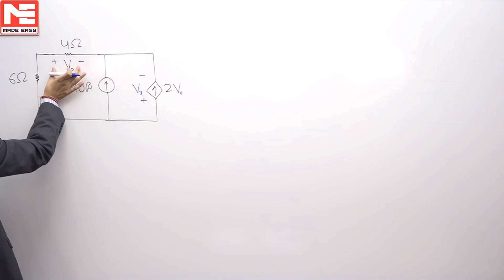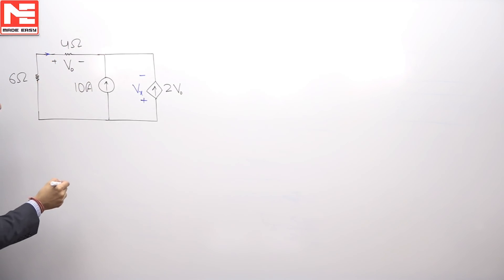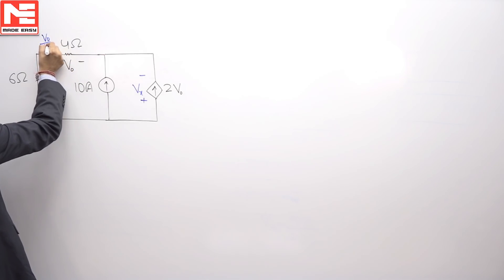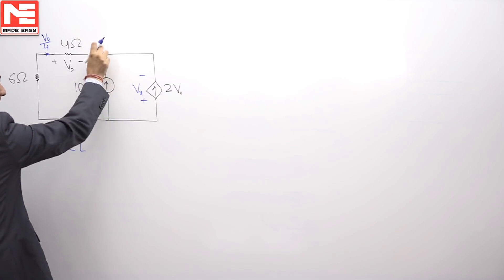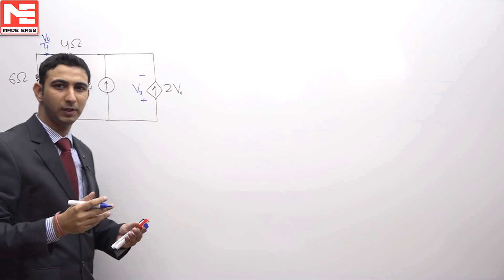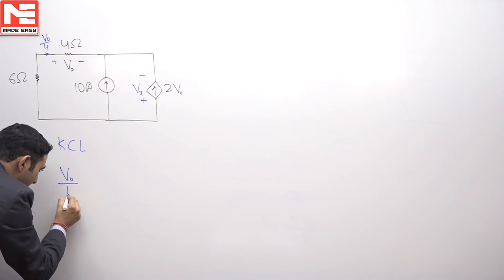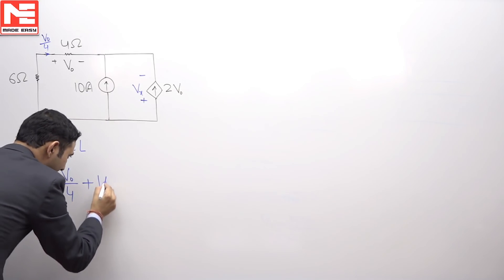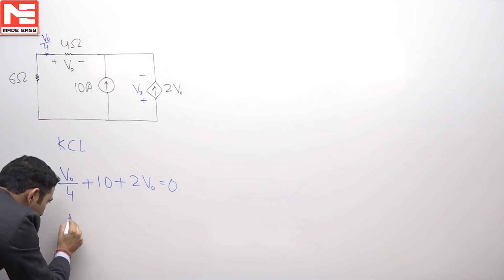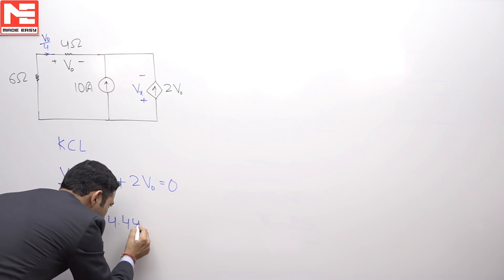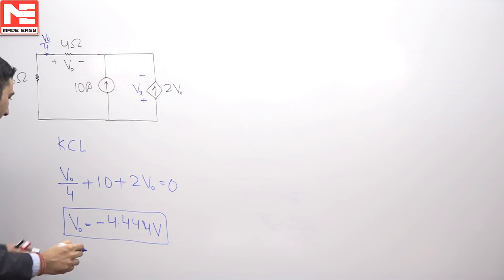For the calculation of V0, you can see this voltage V0 is across this 4 ohm resistor — as this is plus-minus, it means the current was flowing in this direction. The current will be voltage upon the resistance. Let us apply KCL. As you can see, all the currents are incoming towards the node, and KCL says that the algebraic sum of the currents meeting at a point or entering a node must be equal to 0. Therefore, it will be V0/4 plus incoming current 10 plus incoming current 2V0 is equal to 0. Solving this equation, V0 is coming equal to minus 4.444 volts.